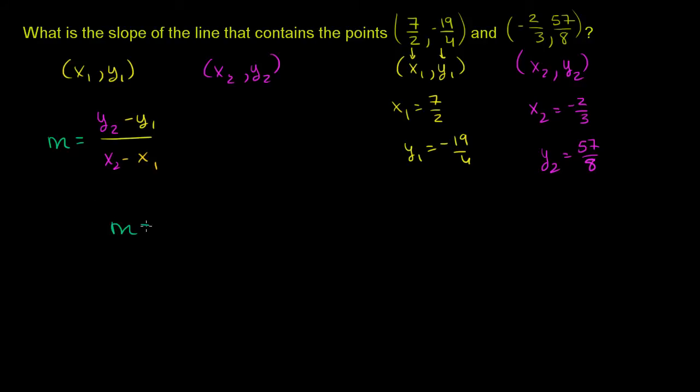And then we essentially can just apply what we know about the slope. The slope between those two points is going to be equal to y₂, which is 57/8 minus y₁, which is -19/4, all of that over x₂ is -2/3 minus x₁, which is 7/2. And now, frankly, the hardest part of actually doing this is to deal with the fractions over here.